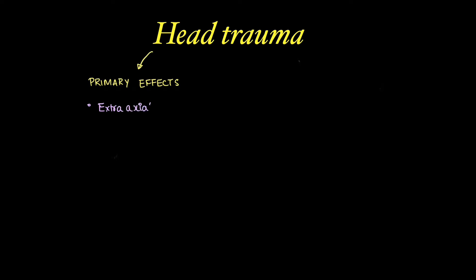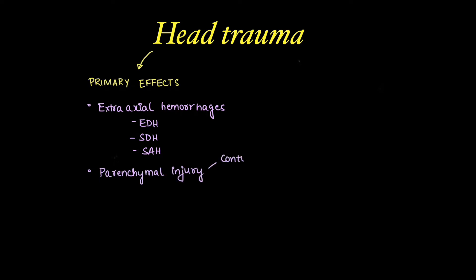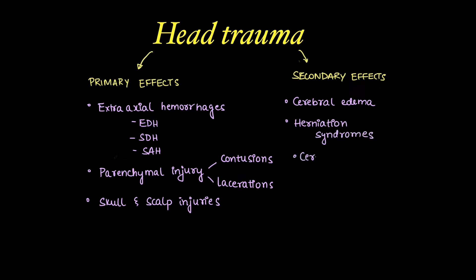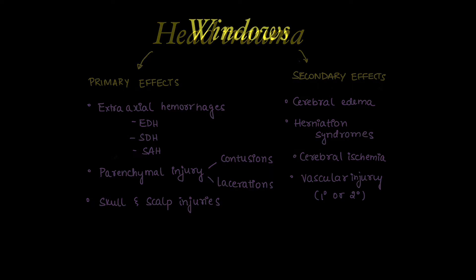Primary effects are directly due to trauma, like extra-axial hemorrhages, extradural hemorrhage, subdural hemorrhage, subarachnoid hemorrhage, and parenchymal injuries like contusion, laceration of brain, and skull and scalp injuries. The secondary effects of trauma are cerebral edema, herniation syndromes, cerebral ischemia due to trauma, and vascular injuries, which can be primary or a secondary effect.